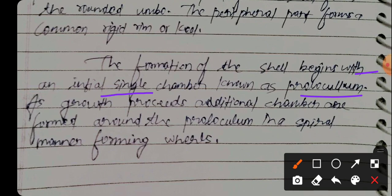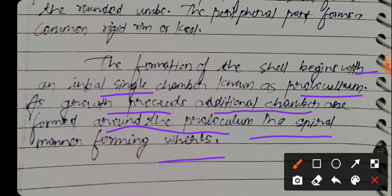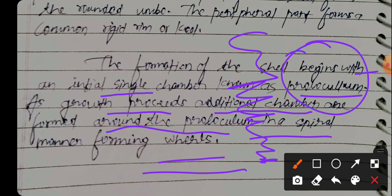As growth proceeds, additional chambers are formed around the proloculum in a spiral manner, forming walls. The chambers are added in a spiral spring-type arrangement.